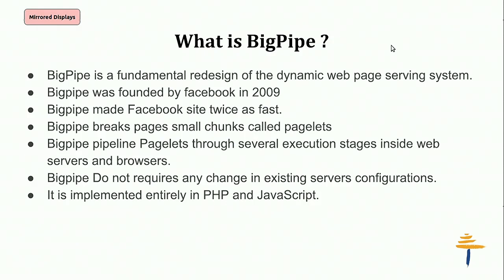Facebook uses BigPipe and it has drastically reduced page load time by almost 50%. What is BigPipe? BigPipe was a concept conceived by Facebook. Whenever the user loads the page, it renders the static content first, and after that loads the dynamic content into the DOM. BigPipe made Facebook twice as fast. It segregates the page into smaller chunks known as pagelets, and pipelines pagelets through several execution stages inside the web server and browser.